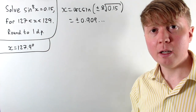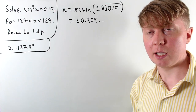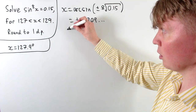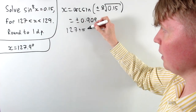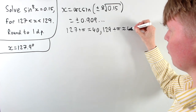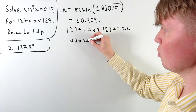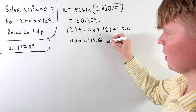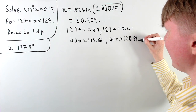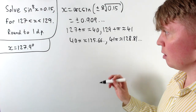We need our solutions between 127 and 129. We can't easily draw the sine graph all the way up to 129 in radians, since 127 divided by π is around 40, and 129 divided by π is around 41. Calculating: 40π is around 125.66, and 41π is around 128.81. So we know we're going to be between 40π and 41π, or maybe just slightly beyond 41π.